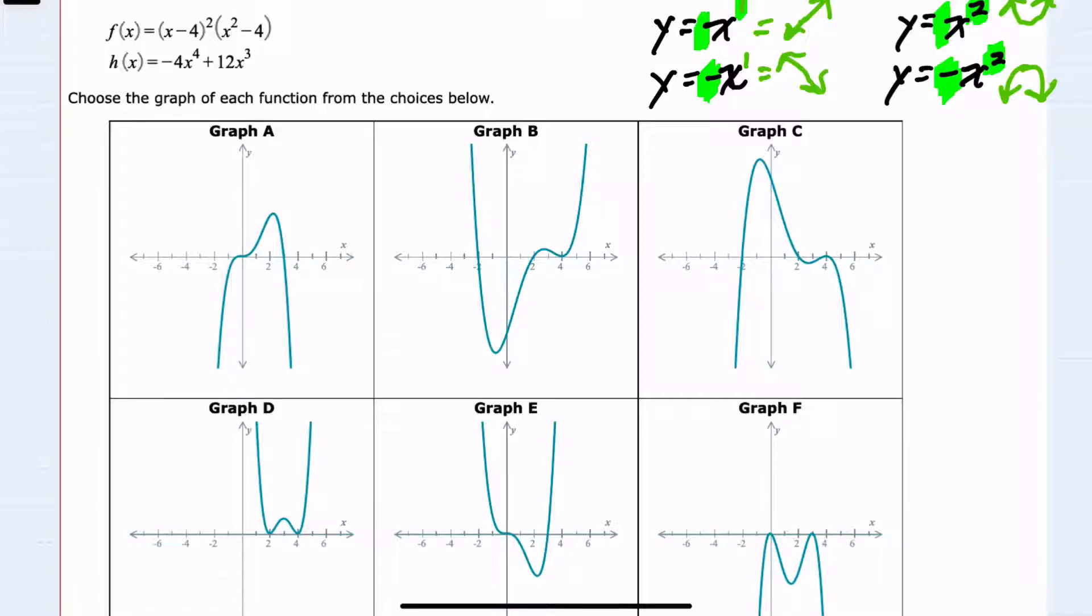With this in mind, I can look at each of these, starting with f of x. To find the leading coefficient, I'll look first at this x minus 4 that is being squared. So the leading coefficient once squared would be x squared, and then the second factor here has a leading coefficient of x squared. So those would be multiplied, giving me an x to the fourth. So my end behavior would be the same as positive leading coefficient, even degree. So this is going up and up.